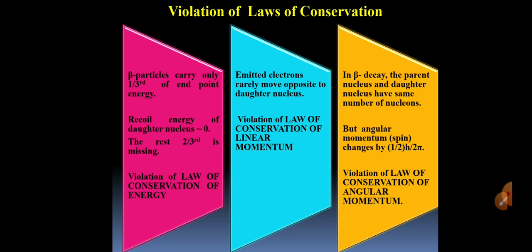Moreover, emitted electrons rarely move opposite to daughter nucleus. In other words, we can say that law of conservation of linear momentum also gets violated.